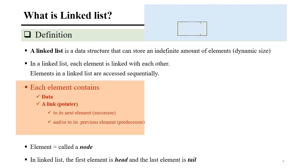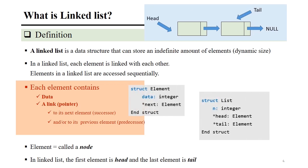So, what is a linked list? It is a data structure that can store an indefinite amount of elements. The elements here refer to the data that we want to store. It can store as much data as we want because it uses dynamic memory management. In a linked list, each element is linked with each other using a pointer, and to access linked list elements, we need to access them sequentially.